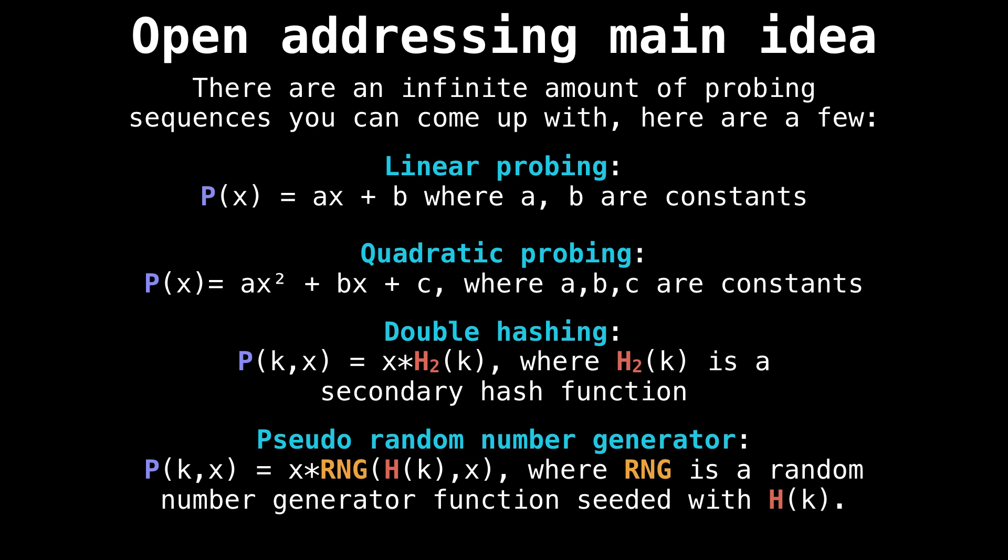The last one is the pseudo random number generator probing function that we can use. Given a random number generator, we're going to seed it using the hash value of our key, which we know is deterministic. So it's always going to be the same thing. And then we can use that inside our probing function, which is pretty neat and increment by x each time. And we know x increments by one. So we're just getting the next number in the random number generator and then the next one after that.